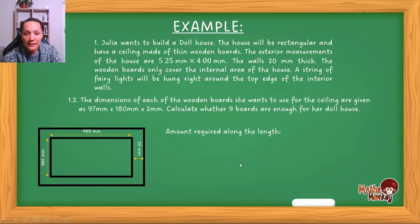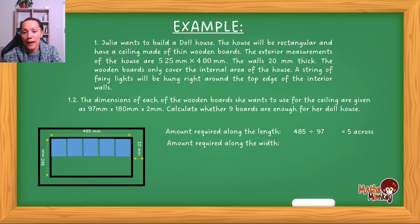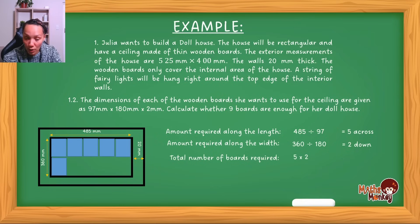Let me visually show what I'm doing. The amount required along the length is 485 divided by the board length of 97, giving 5 boards. The amount required along the width is 360 divided by the board width of 180, giving 2 boards. To find the total number of boards, multiply those two answers: 5 multiplied by 2 gives 10 boards. That's how it's going to look.